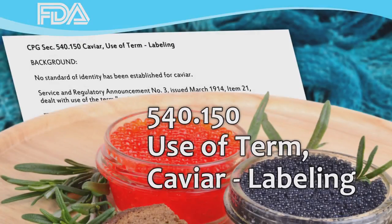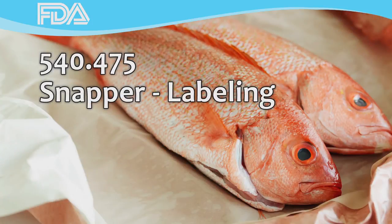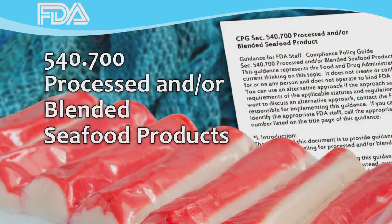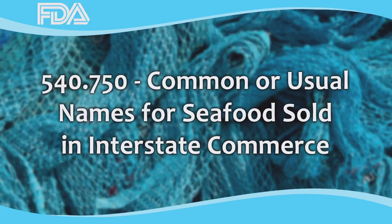The Caviar CPG describes the proper labeling for fish eggs, both sturgeon and non-sturgeon species. The Snapper Labeling CPG states that only the fish species Lujanus campuchanus can be marketed as red snapper. Processed and/or blended seafood products have a CPG that describes their proper labeling. Surimi is an example of a processed seafood product. FDA's policy for common or usual names for seafood sold in interstate commerce is found in CPG 540.750, which explains our policy for common or usual names as they relate to market names. See our website for compliance policy guides.